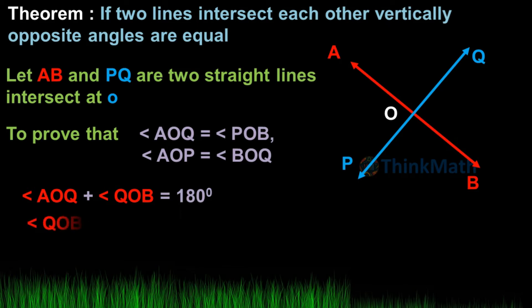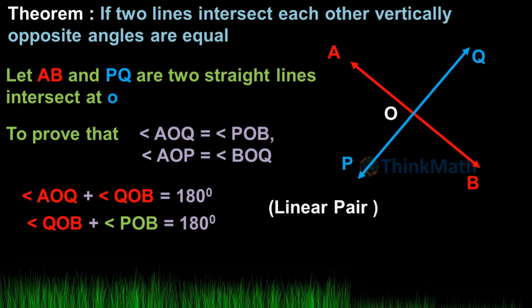Angle QOB plus angle POB is equal to 180°. It is a linear pair.